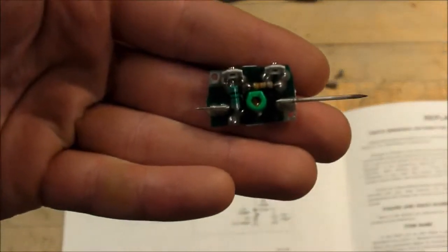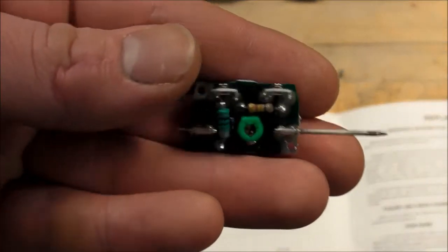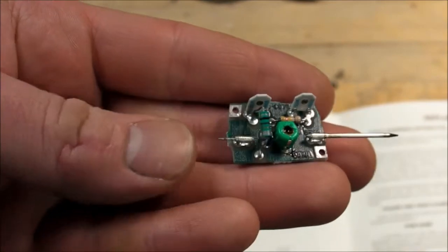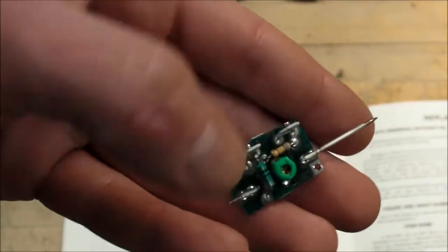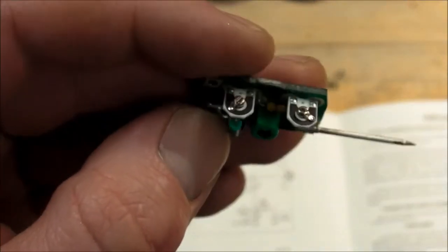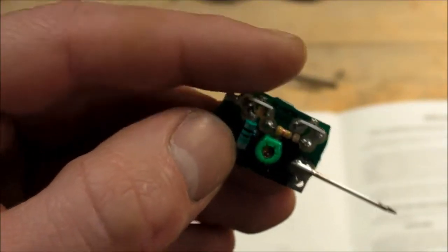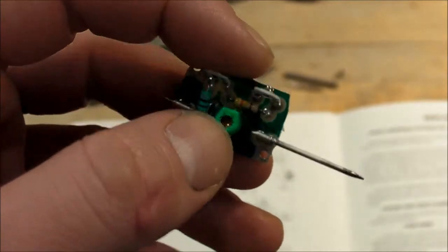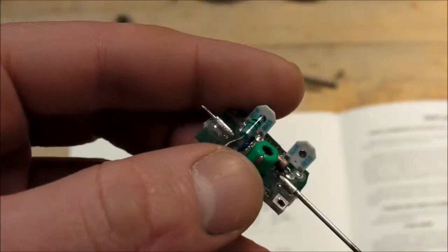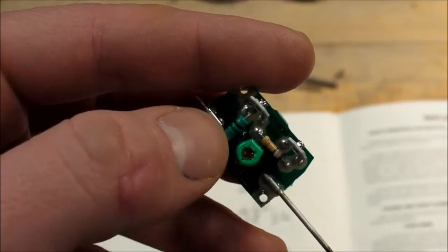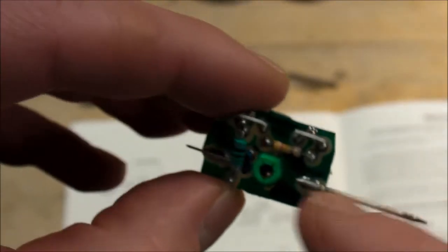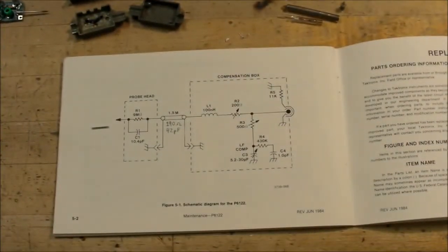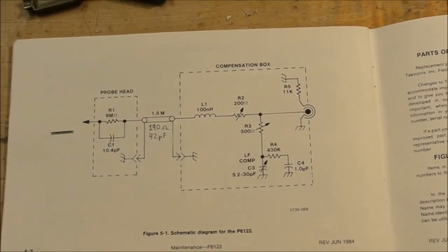But basically right here is the circuit board inside the compensation box. This is the probe end and then this end goes into the scope. And so you got a couple of pots here. Those were set by the factory and the user serviceable variable capacitor is this green thing right here. You got the inductor, little blue capacitor there, and another resistor. And those are all clearly depicted here in the schematic in the probe manual.